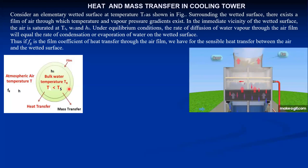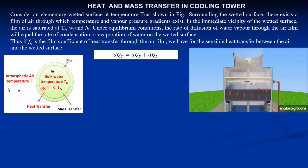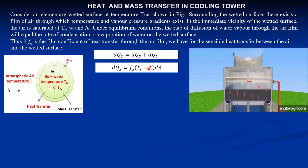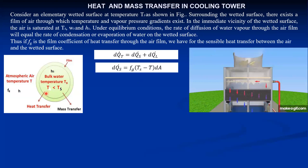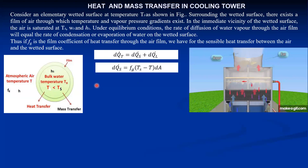There is heat as well as mass transfer taking place. The total heat transfer from the water droplet is the summation of sensible heat plus latent heat. Sensible heat is obtained using the convection relation: Fg × A × delta T, where Fg is the heat transfer coefficient of unsaturated air, delta T is the temperature difference between the surface temperature of the water droplet and the ambient air temperature T, and DA is the surface area of the water droplet. This gives the sensible heat transferred from the water droplet to air due to convection.